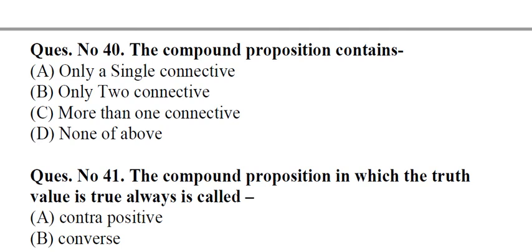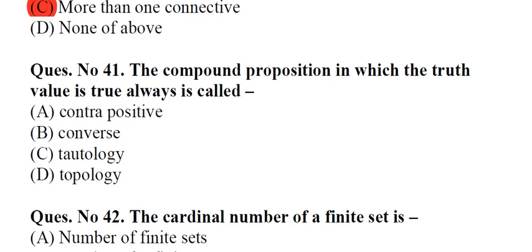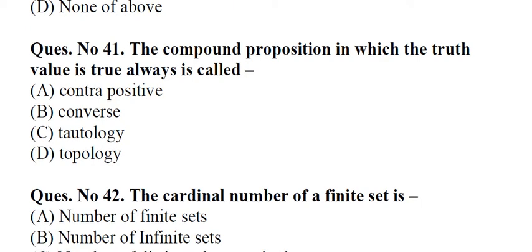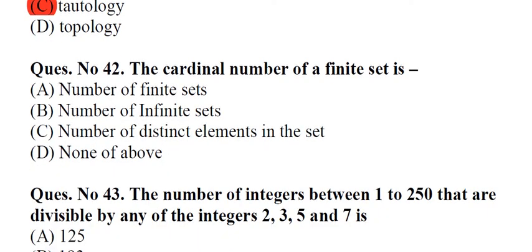Question number 40: The compound proposition contains A. Only a single connective, B. Only two connective, C. More than one connective, D. None of above. Answer: C, More than one connective. Question number 41: The compound proposition in which the truth value is true always is called A. Contrapositive, B. Converse, C. Tautology, D. Topology. Answer: C, Tautology.